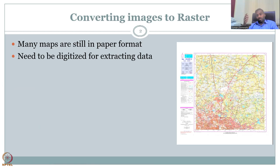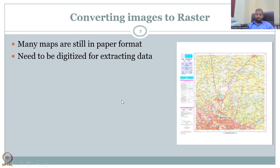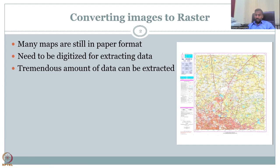A map is just a paper — it has lat/longs and geospatial information printed on it, but a plain image cannot function in the GIS platform. There is a difference between using a GIS platform and a photo viewer. In GIS, you give location to the data — a photo of a bus needs no location, but a map must be anchored. Tremendous data can be extracted from these survey maps, but you need to be careful about what data you need, because extracting everything would make the file too big to open.